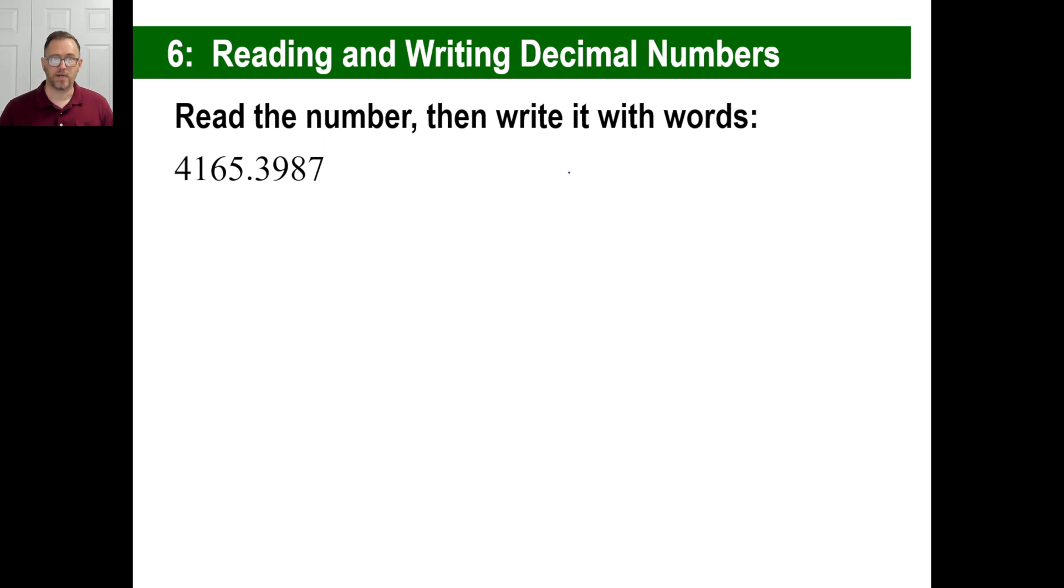Let's do a couple of these. Read this number, write it with words. I'm just going to speak the words. This number is read this way: 4,165 and, that's what the decimal is, 3,987 ten-thousandths.